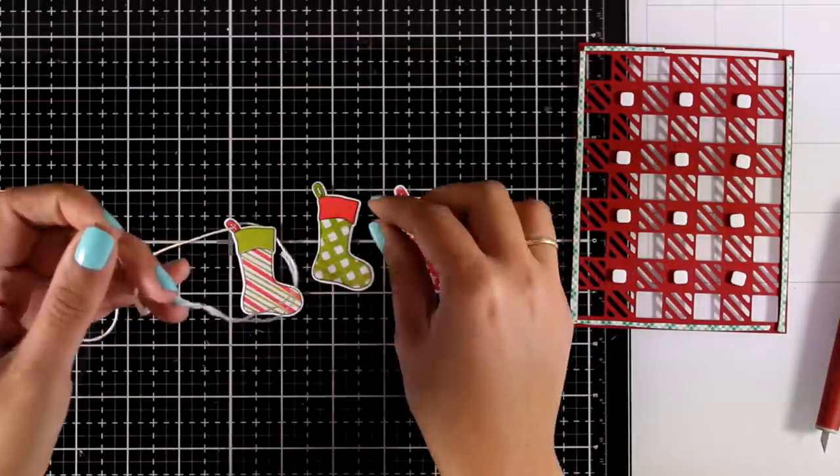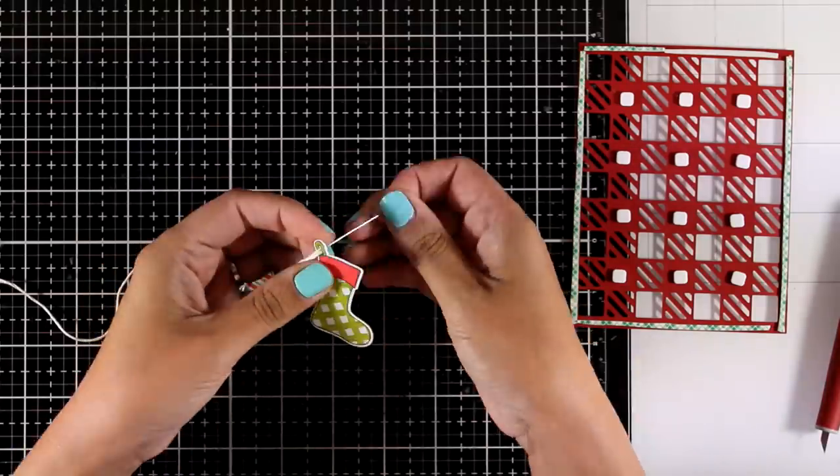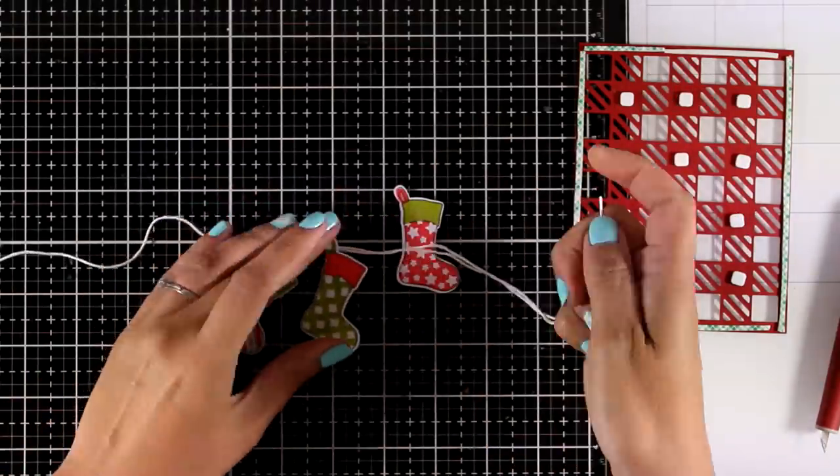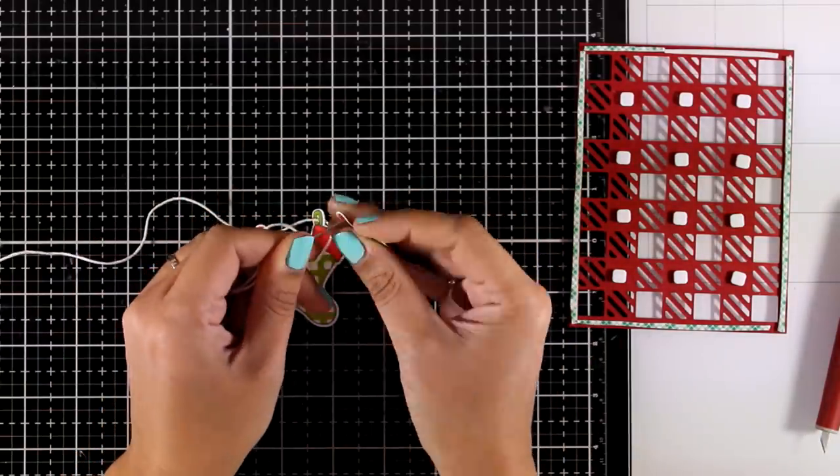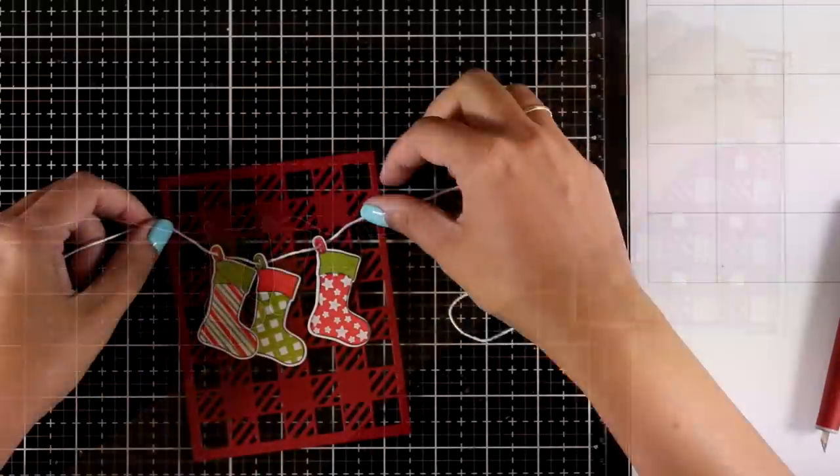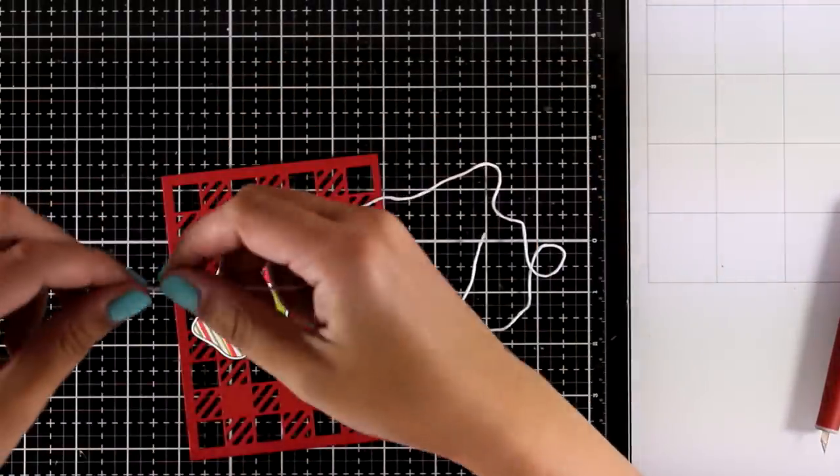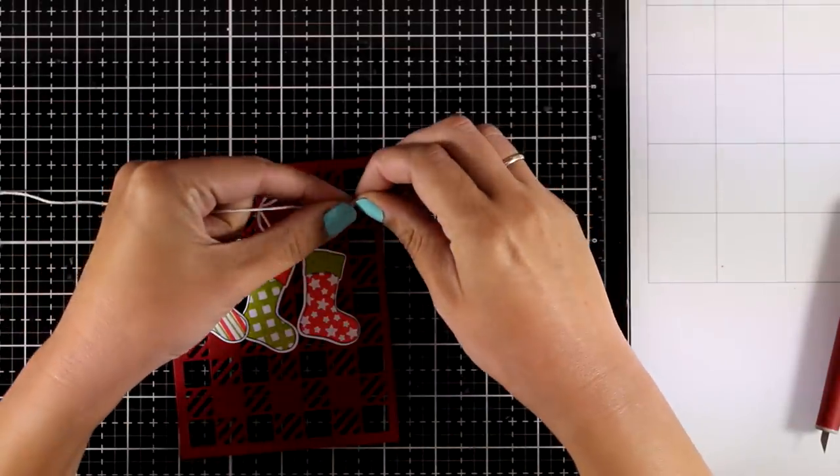And now I have some white floss and a needle and I'm going to thread all three stockings through that floss. And the fact that I already had a tiny little slit in the loop makes my job really easy. And now I can place this piece of thread with the stockings on top of my panel and I'm going to thread those edges underneath that design.